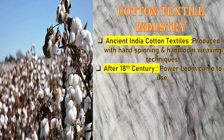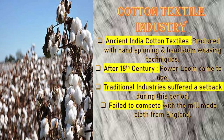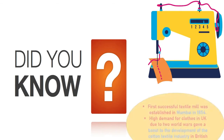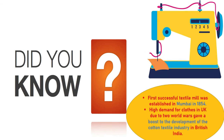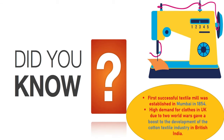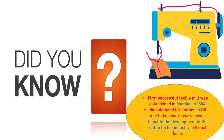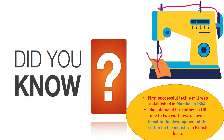Under colonial dominance, the handloom industry faced steep competition from mill-made cloth, which was cheap and of good quality, produced through mechanized industrial units. The traditional industries suffered a setback and failed to compete with mill-made cloth from England. The first textile mill was established in Mumbai in 1854. High demand for clothes in the UK due to the two World Wars gave a boost to the development of the cotton textile industry in British India.